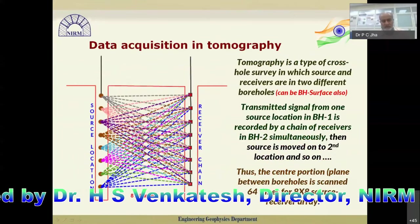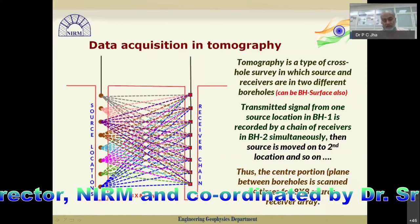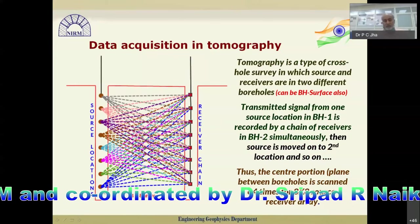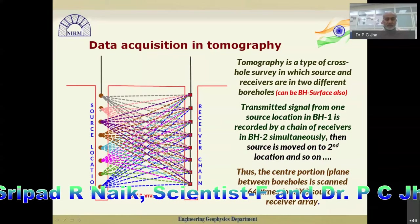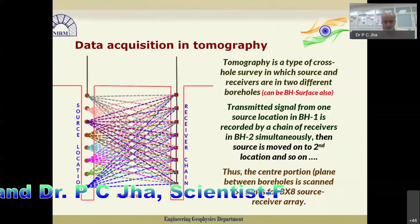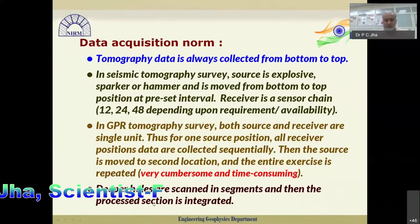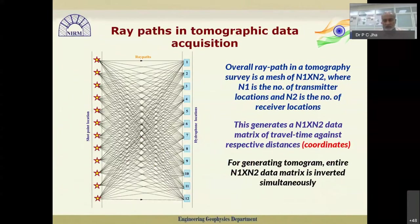For deeper holes scanned in segments, the processed sections are then integrated. If the hole depth is 50 to 70 meters, we can't transmit a signal all the way from 70 meters deep to the surface — it cannot travel that far, and using too much explosive would damage the hole. So we segment: the bottom 20 meters in one step, then the next 20 meters, and so on, generating segmented sections that we integrate to produce the combined tomogram. For a 12×12 array, the overall ray path is n1 × n2, where n1 is the number of transmitter locations and n2 is receiver locations, generating an n1×n2 data matrix of travel times against respective distances.